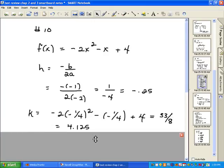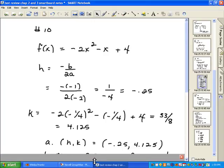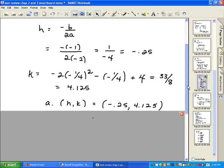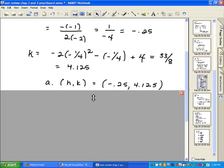And I end up with 4.125. So h is negative 0.25 and k is 4.125. Now, the vertex is represented by h and k. So my vertex is negative 0.25 and 4.125.